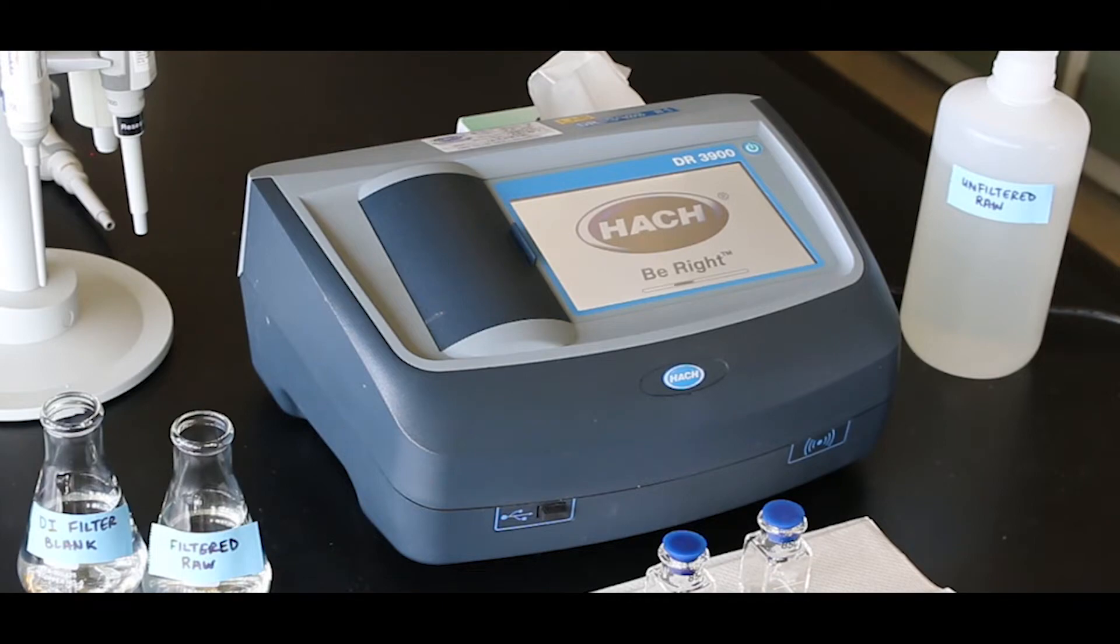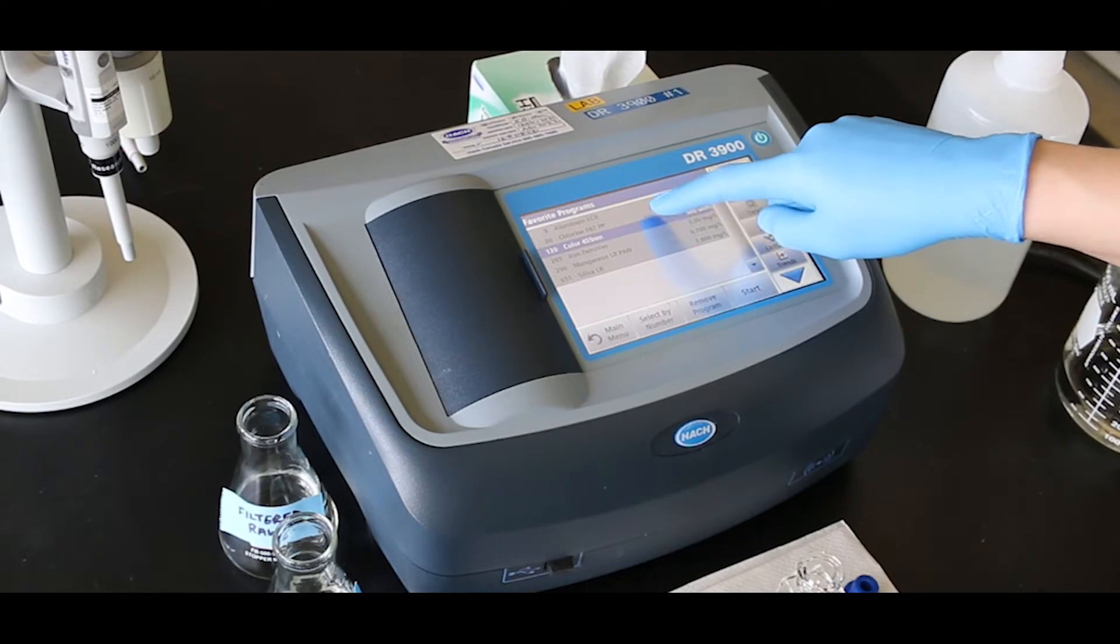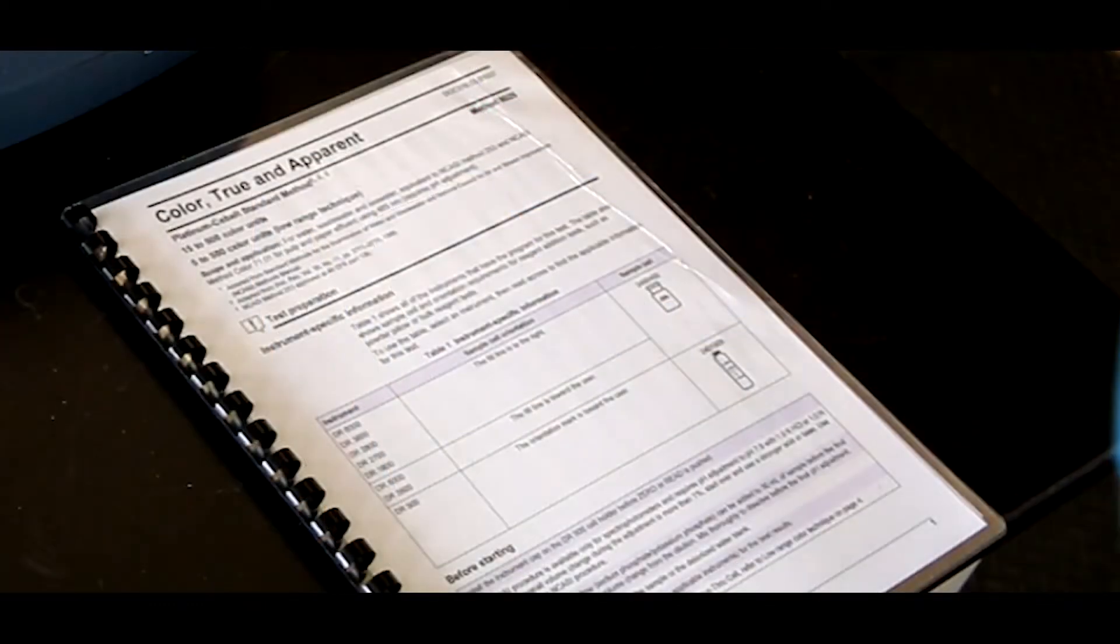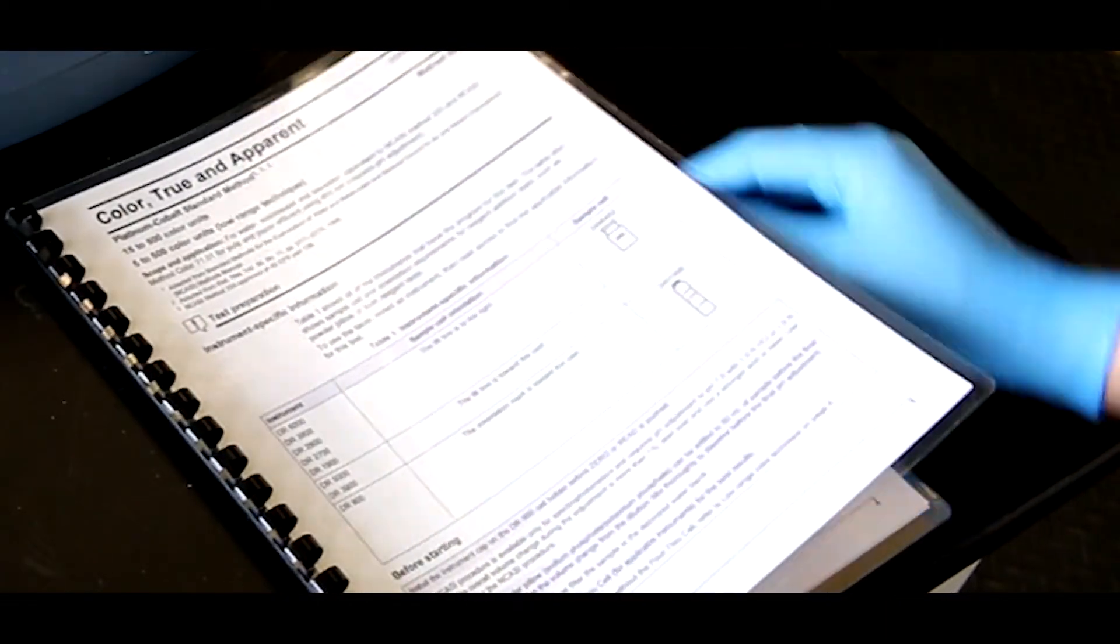We will be using a HAWK DR3900 spectrophotometer for our demonstration. Start the instrument and select the appropriate program. Information on sample cells, adapters, and light shields can be found in the method.